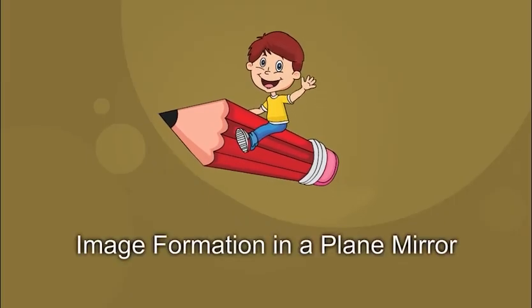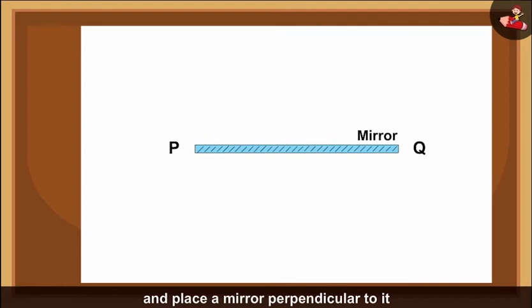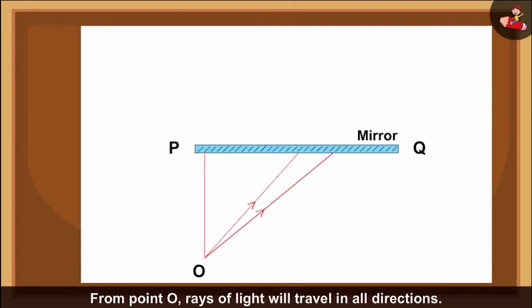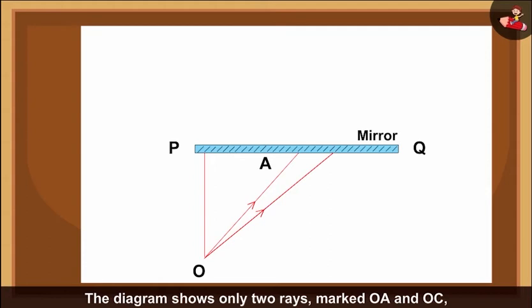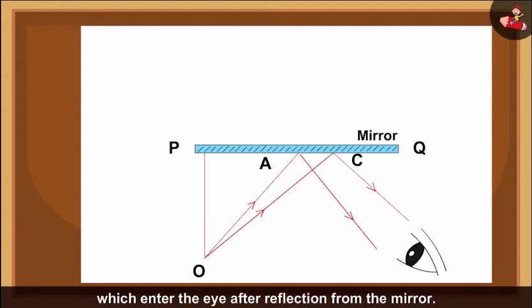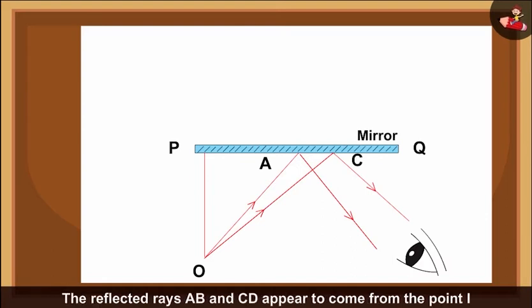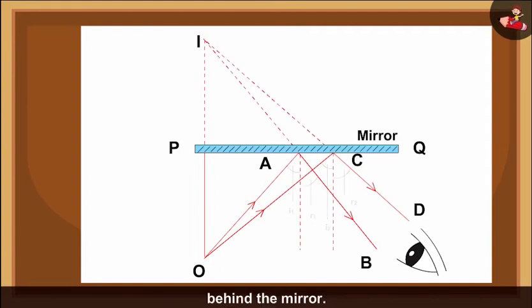Image formation in a plane mirror. Take a white sheet of paper and place a mirror perpendicular to it. Place a point object O in front of the mirror. From point O, rays of light will travel in all directions. The diagram shows only two rays marked OA and OC, which enter the eye after reflection from the mirror. The reflected rays AB and CD appear to come from the point I behind the mirror.